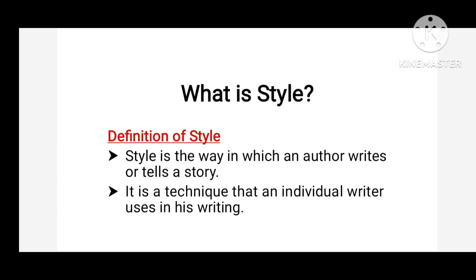But let's first understand what is style. Style is the way in which an author writes or tells a story. Style हम अन्दाज़ को कहते हैं, चाहे वो लिखने का हो या बोलने का हो. अगर हम writing की बात करें, तो एक writer के लिखने के अन्दाज़ को हम style कहते हैं. Style is a technique that an individual writer uses in his writing, क्योंकि हर writer के लिखने का अन्दाज़ दूसरे writer से different होता है. और इस अन्दाज़ को हम sociolinguistics में style कहते हैं.